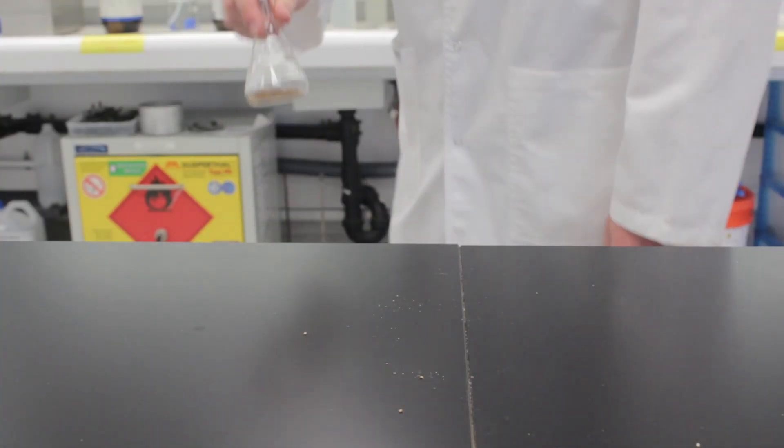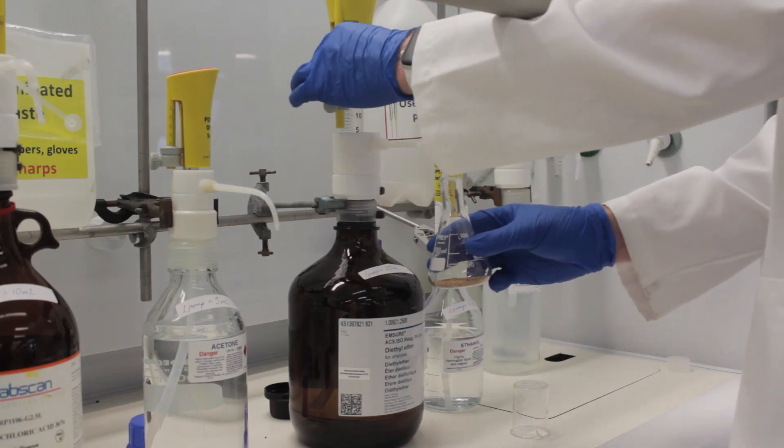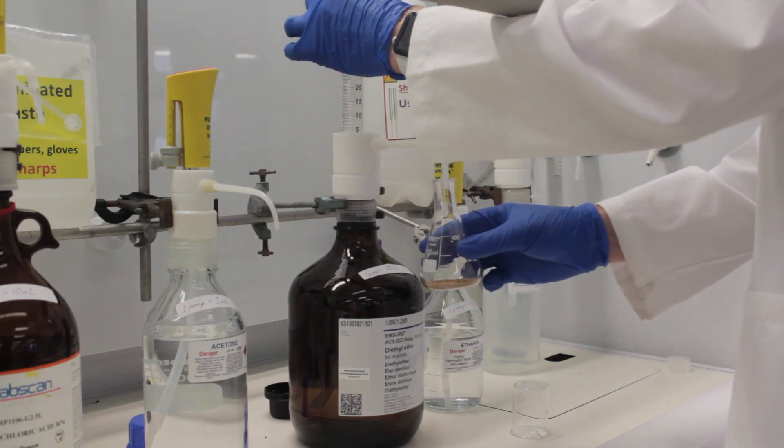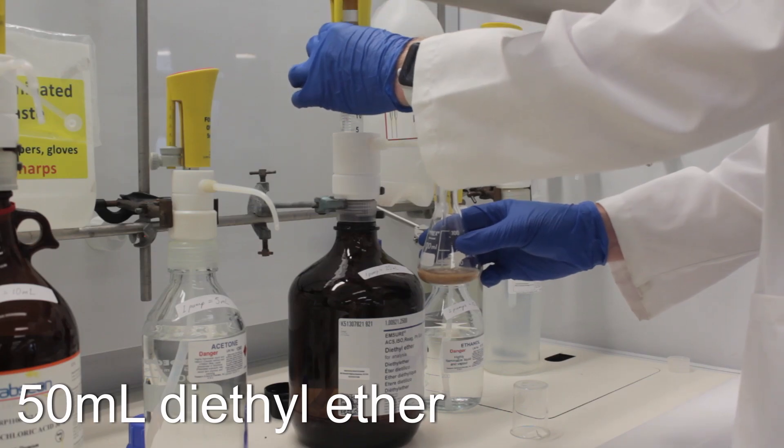Now we need to actually extract the trimyristin from the powder. Take the flask and a 50 ml beaker to the fume hood and add 50 ml of diethyl ether using a pump pack.